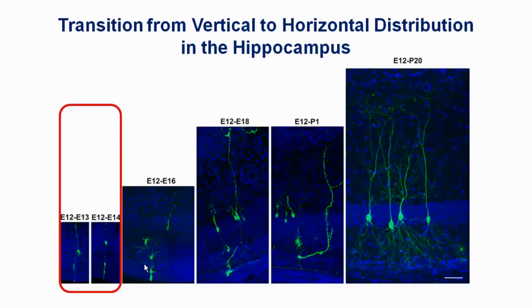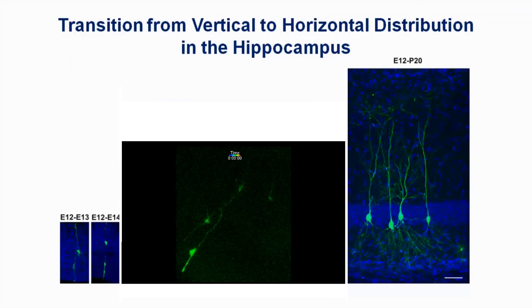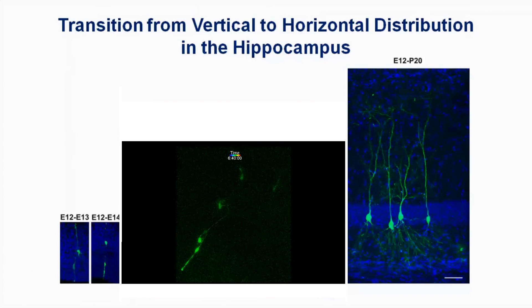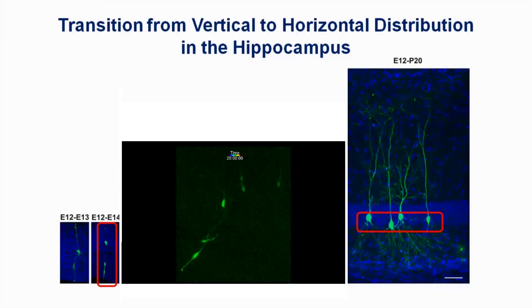However, starting from E16, we noticed that there is progressive bending of the radial fiber in the hippocampus, but not in the neocortex. Our live imaging study suggested that the bending of the radial fiber facilitates the transition from vertical to horizontal distribution of clonally related pyramidal cells in the hippocampus.